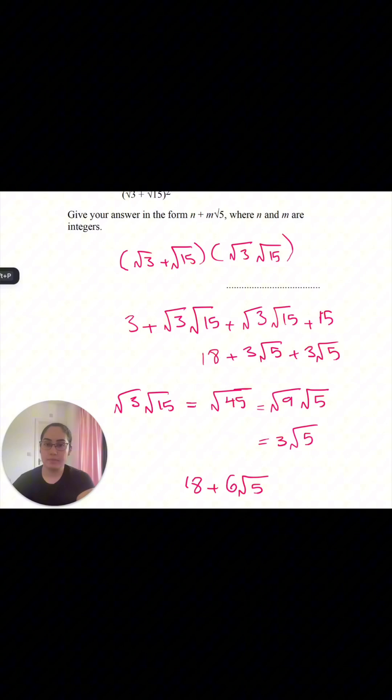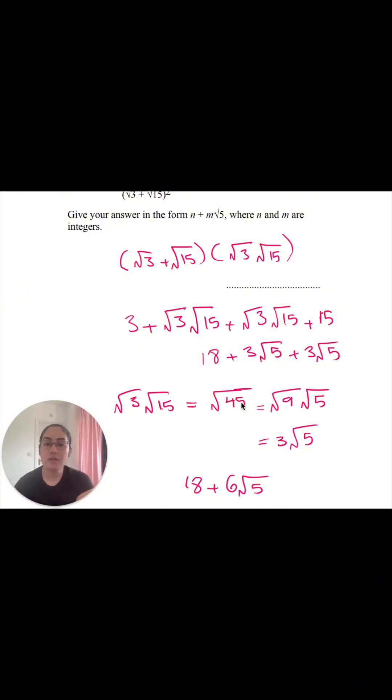Now, I've done the expansion part, and I've done the simplifying part of the question. So let's look back at the format that they wanted us to put it in. So it's n plus m root 5. We have root 5 there, perfect. We have 18 as our n, and 6 as our m. Hope that makes sense. Let me know if you have any questions.